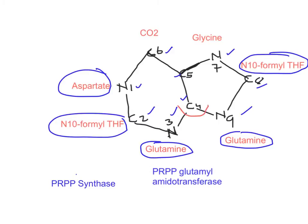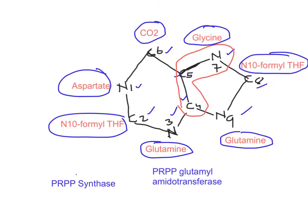Carbon 4, carbon 5, and nitrogen 7 — these three atoms — are all given by glycine; the entire glycine molecule is used to make the purine ring. Carbon 6 is given by carbon dioxide. In summary: N1 from aspartate, C2 from N10-formyl THF, N3 from glutamine, C4/C5/N7 from glycine, C6 from CO2, C8 from N10-formyl THF, and N9 from glutamine.